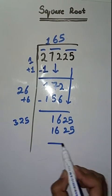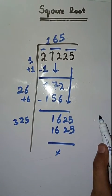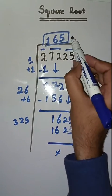So completely solved. The square root of 27225 is 165.